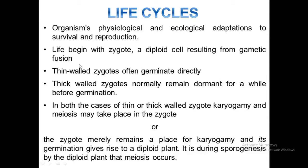The zygote may be thick-walled or thin-walled. Thin-walled zygotes often germinate directly without undergoing any resting period, whereas thick-walled zygotes generally have multilayered walls, also known as zygospore or oospore, and normally remain in a dormant state for a while before germination. In both cases of thin or thick-walled zygote, karyogamy and meiosis may take place in the zygote, which on germination produces a haploid plant.